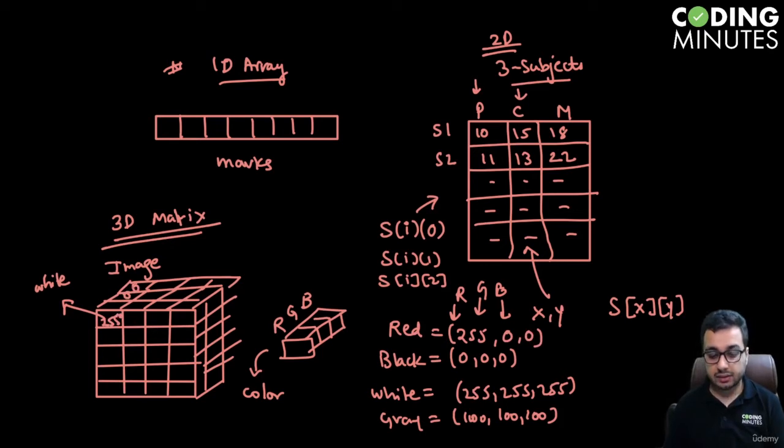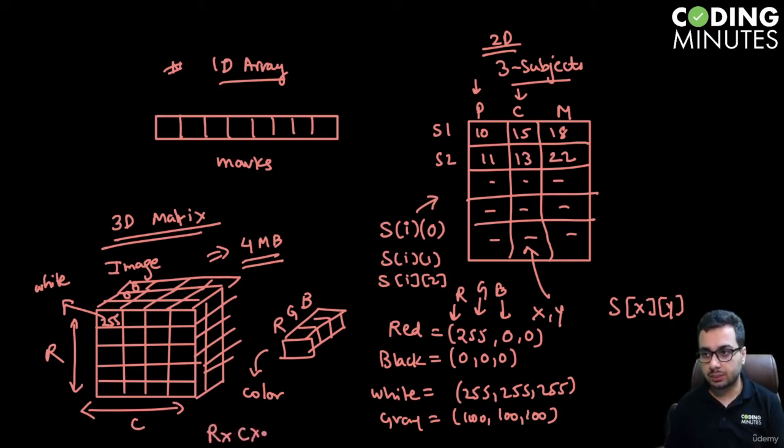These numbers can be stored in a 3D matrix. When you store images, if an image takes 4 megabytes of memory, this size is calculated by finding the number of rows times the number of columns times 3, because you're storing these many integers. Each integer is an 8-bit integer because the maximum value is 255, and 2 raised to the power 8 is 256.